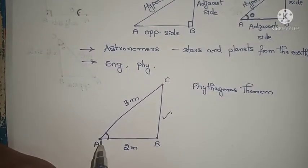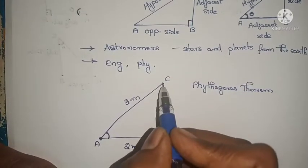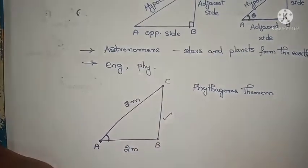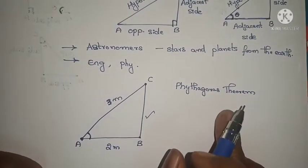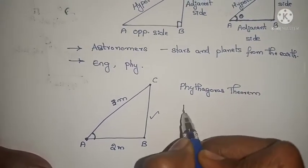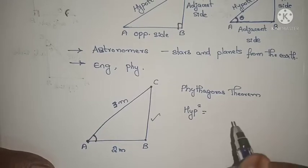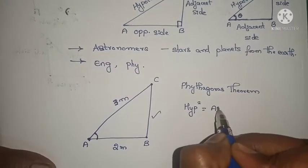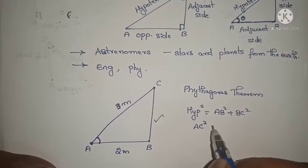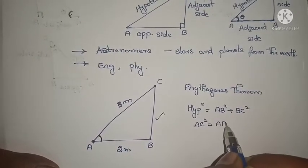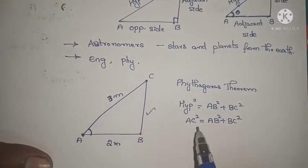I am standing at point A, 2 meters ahead from the building, and the slant height to the topmost point of the building is 3 meters. Then I can find the height of the building by using the Pythagoras theorem. What is the Pythagoras theorem? Hypotenuse square equals the sum of the squares of the other two sides: AC² = AB² + BC².